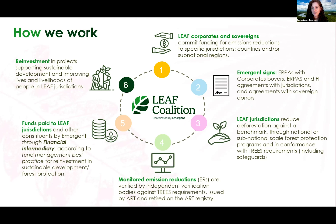Once those results have been achieved and the jurisdiction has monitored the emissions reductions, they go through a process of independent validation and verification against the TREES standard requirements. Upon successful validation and verification, TREES credits can be issued by ART and ultimately retired on the ART registry when transferred to a buyer, or the jurisdiction can retire credits in their own accounts when they receive payment. We rely on the ART program to not only issue the TREES credits we transact but also to provide the registry platform for retirement and ensure no double counting.